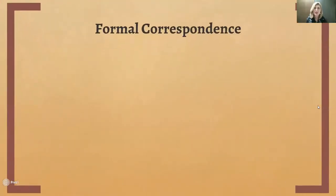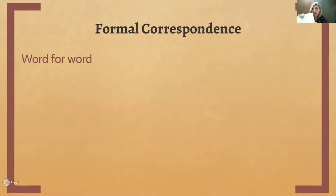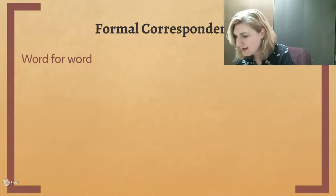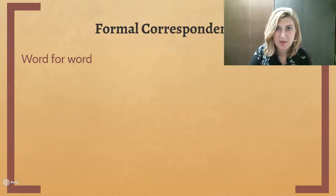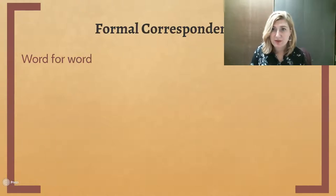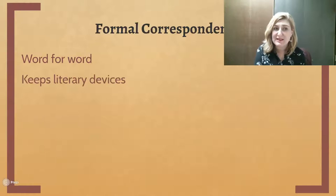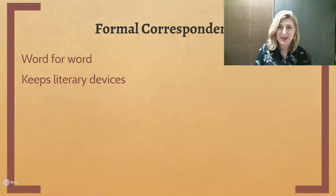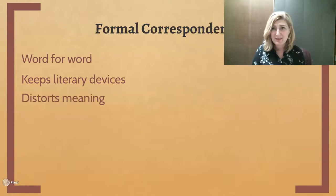If somebody is going to do a formal correspondence kind of translation, they're going to take the Hebrew — I'm holding up the Hebrew again — and do a word-for-word translation. You may find things in the text like strange word or sentence structure, so they may kind of like Yoda put a verb first. The formal correspondence people are going to go word for word every time, translated exactly like it appears in the Hebrew. One of the nice things about this is that it keeps the Hebrew literary devices, so what the Hebrew author is doing you also get in English.